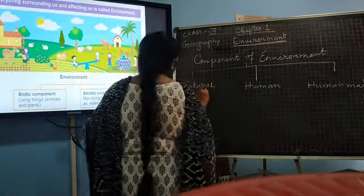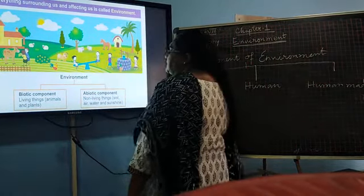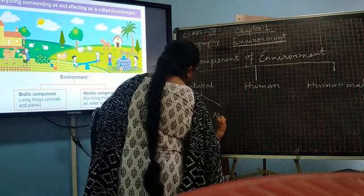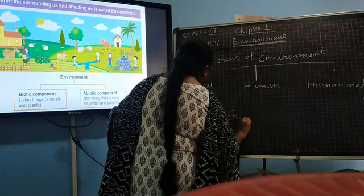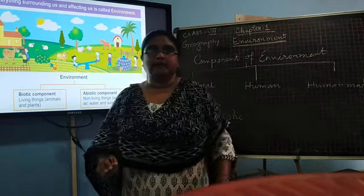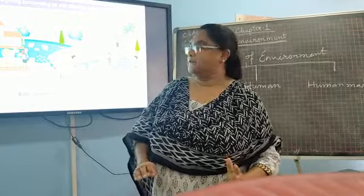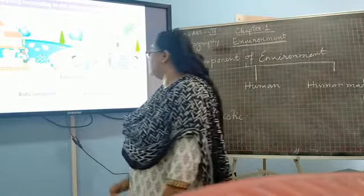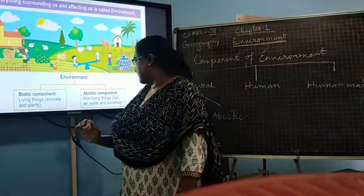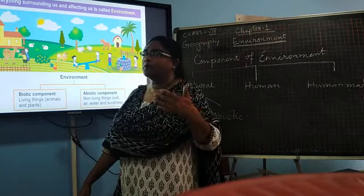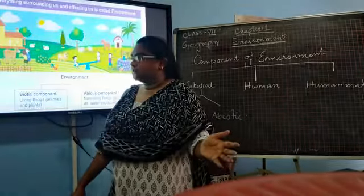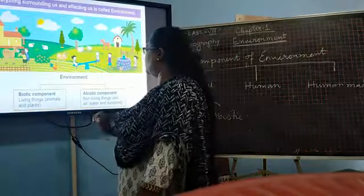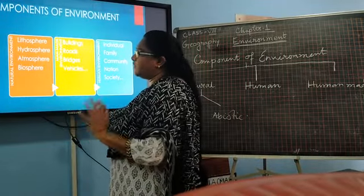The natural environment consists of two types of things: biotic and abiotic. Biotic means living things — those which have life, such as animals and plants. Abiotic means non-living things, like soil, air, water. Whatever you see that has no life is known as the abiotic component.